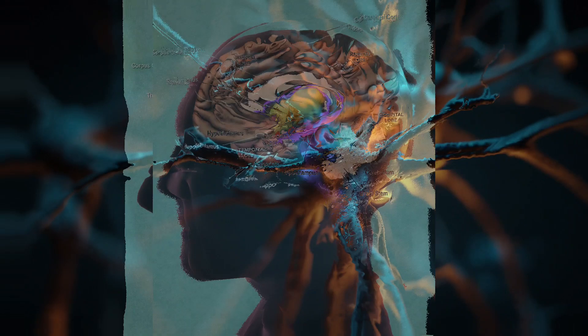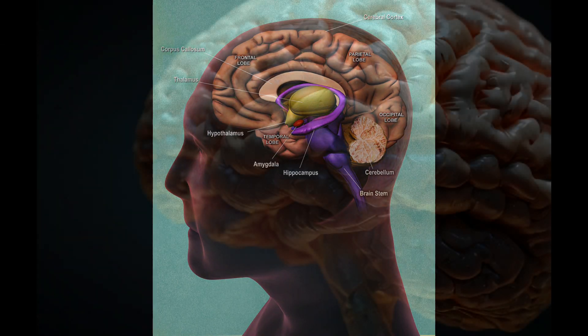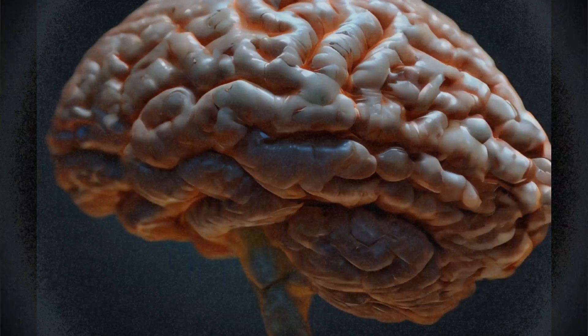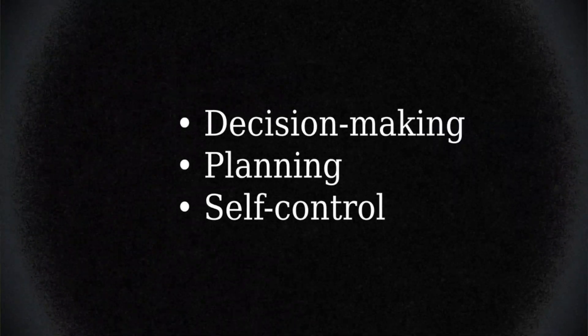The human brain is divided into distinct regions, each responsible for specialized functions. For example, the prefrontal cortex, located at the front of the brain, plays a critical role in decision-making, planning, and self-control.